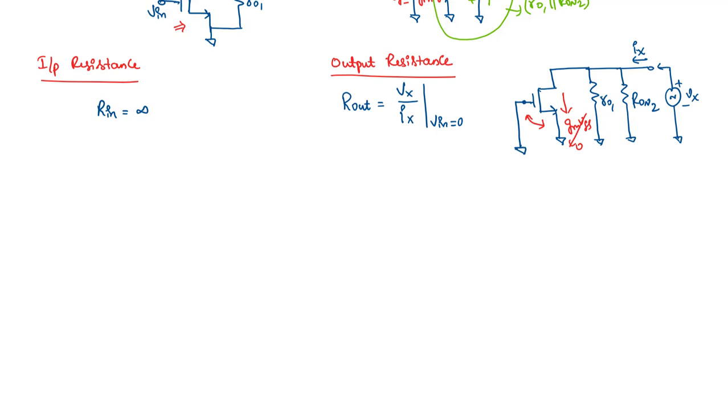Now we have Vx here, due to which Ix is flowing. It will flow through the parallel combination of R01 and Ron2. Hence Vx will be equal to R01 in parallel with Ron2 times Ix. Hence we can say Rout is equal to R01 in parallel with Ron2.